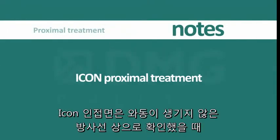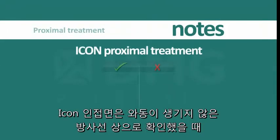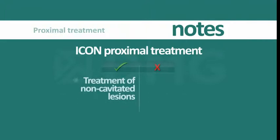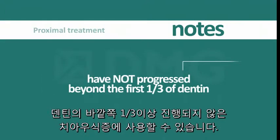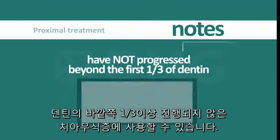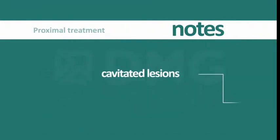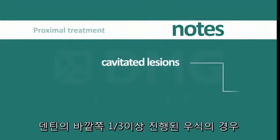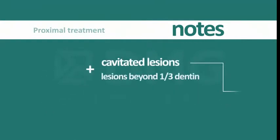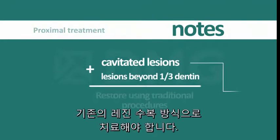ICON proximal treatments are indicated for the treatment of non-cavitated lesions that have not progressed beyond the first one-third of dentin when measured radiographically. Cavitated lesions and those that have progressed beyond the first one-third of dentin should be restored using traditional restorative procedures.